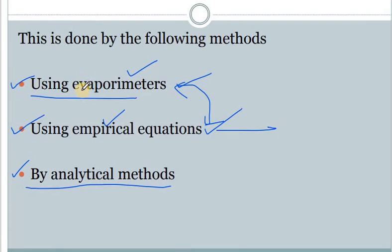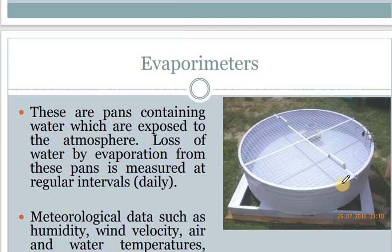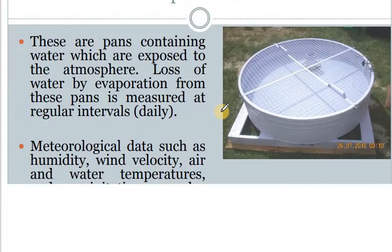Let me advise you what the first instrument, the evaporometer, consists of. Basically it consists of some metallic pans. Water is stored in this pan and kept for some interval, and how much water gets depleted or evaporated during that particular time — that particular level is noted, and by this you can get the value of evaporation.